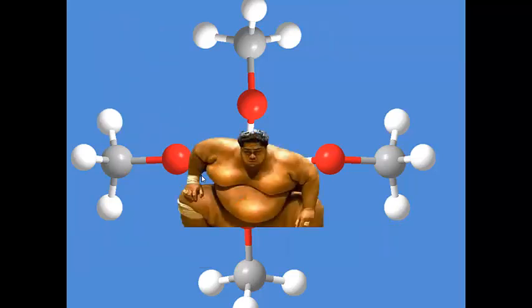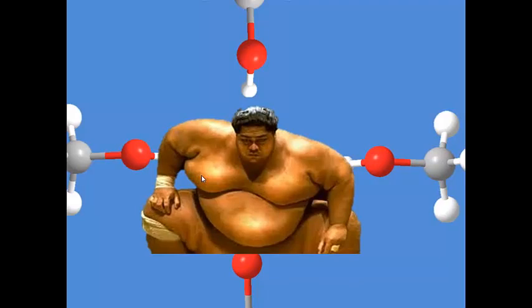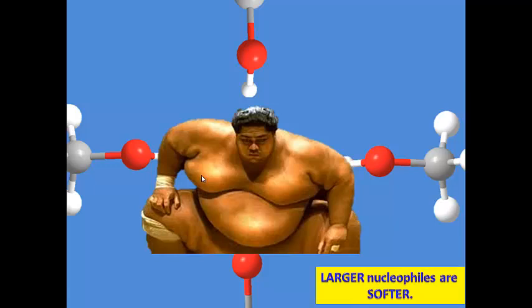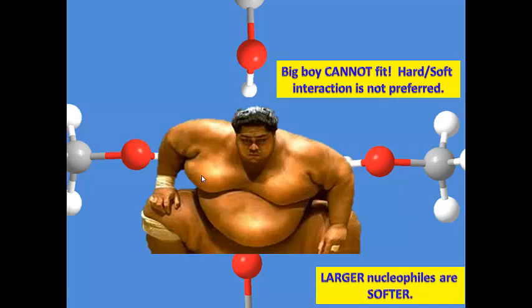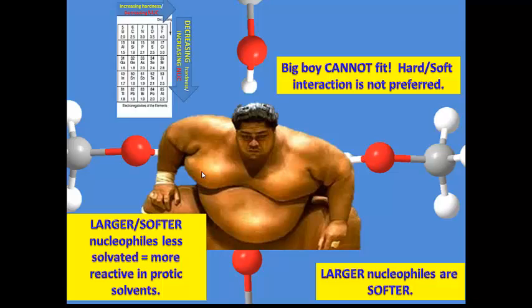If we put the sumo wrestler in the same scenario, going down the column from top to bottom increases atomic radius, making the nucleophile softer. As the nucleophile becomes softer, the solvent has a harder time keeping it trapped, so it becomes more reactive. Larger nucleophiles are softer, and the sumo wrestler can't fit inside the solvent cage as well because that's a hard-soft interaction — not as strong as a hard-hard interaction. So larger, softer nucleophiles are less solvated and more reactive in protic solvents. That's why the trend going from top to bottom in polar protic solvents shows increasing nucleophilicity, as size increases, softness increases, and the solvent's ability to trap the nucleophile decreases.